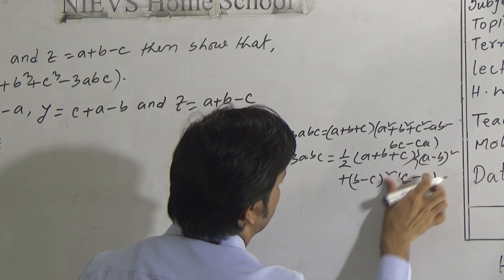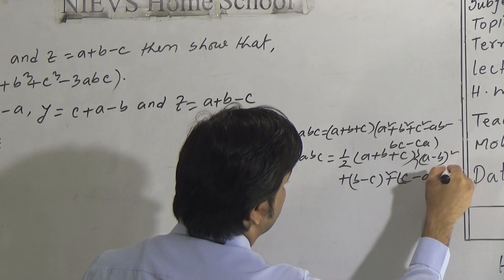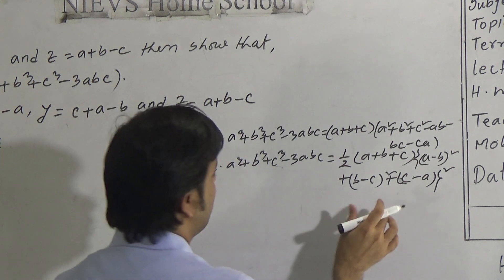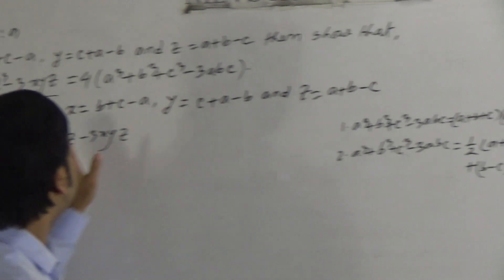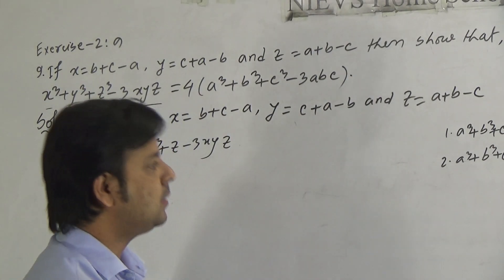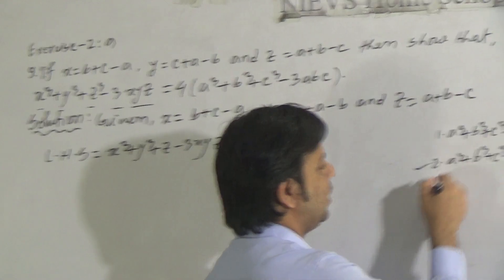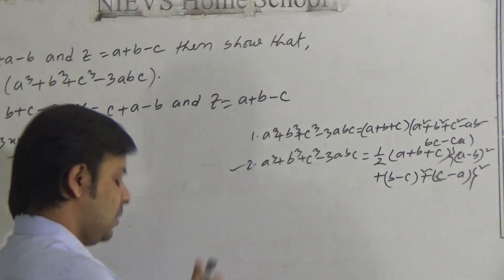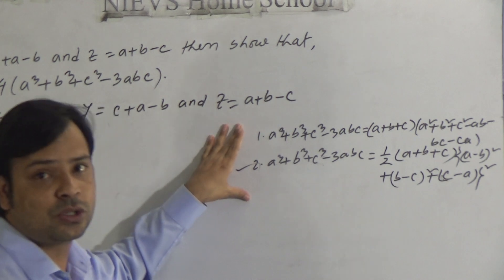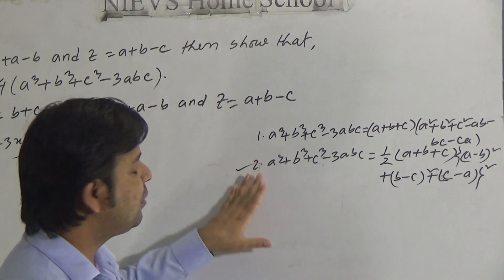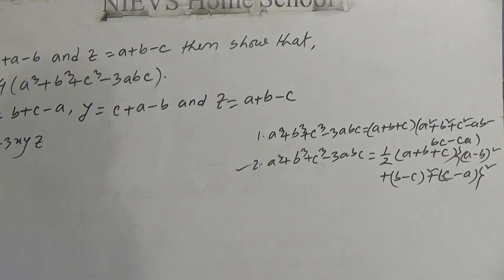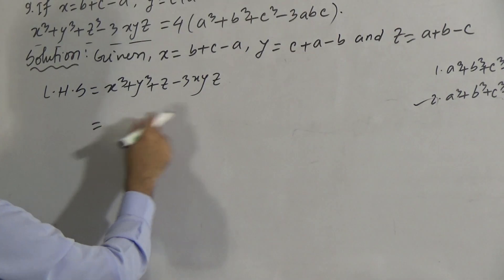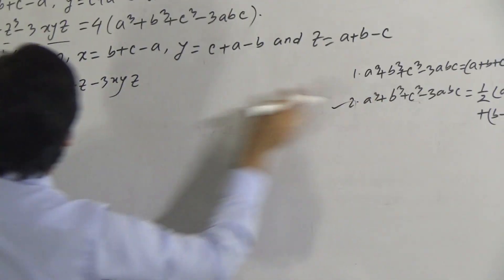If we apply any formula we can show the right side, but applying the second formula will be easier for us. So, I will apply the second formula as the calculation will be easier. Applying the second formula, we can write: ½(x + y + z)[(x − y)² + (y − z)² + (z − x)²].